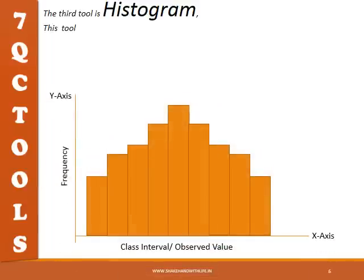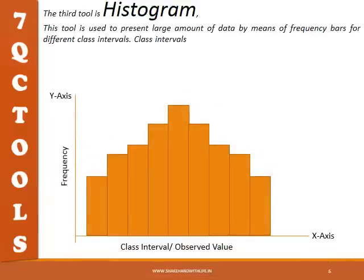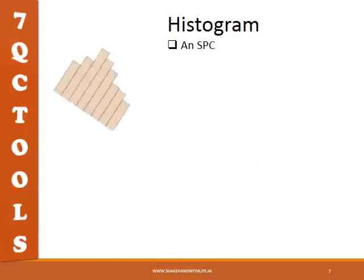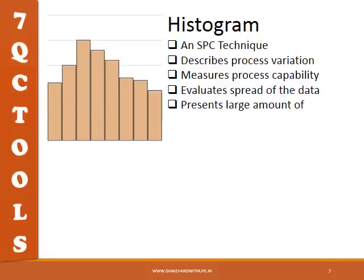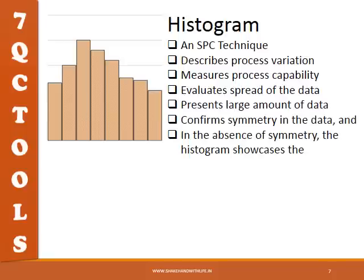The third tool is histogram. This tool is used to present a large amount of data by means of frequency bars for different class intervals. Class intervals are taken on the x-axis while the frequencies are taken on the y-axis. As an SPC technique, the histogram describes process variation, measures process capability, evaluates spread of data, confirms symmetry in the data, and in the absence of symmetry, showcases the skewness present in the data.